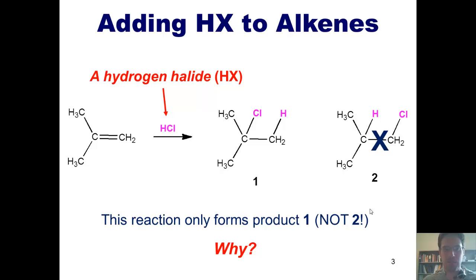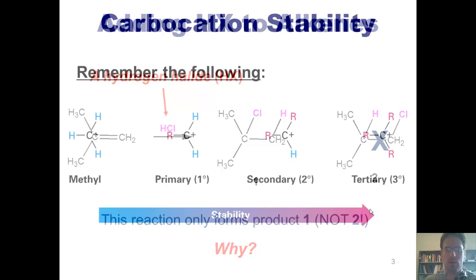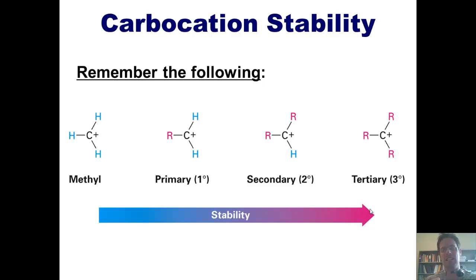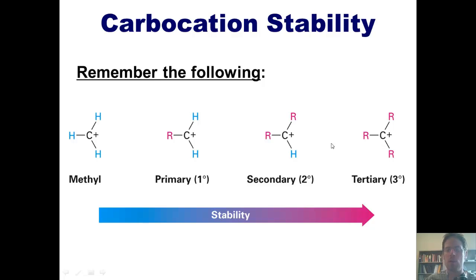Of course I'm going to explain why, but in order for you to understand the answer, I need you to memorize one thing that is crucially important. You have to remember that different carbocations are differently stable depending on how many carbons are bonded to them. I demand that you, my students, memorize this: tertiary carbocations are more stable than secondary carbocations, which are more stable than primary carbocations, which are more stable than methyl carbocations.